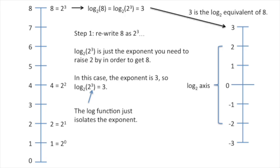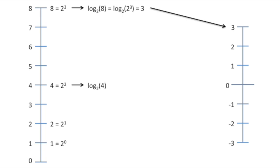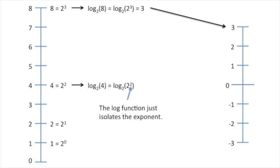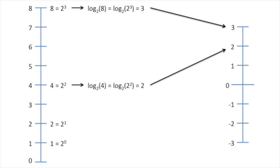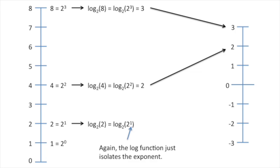That means 3 is the log base 2 equivalent of 8 on our log base 2 axis. Now let's take the log base 2 of 4. First, we rewrite 4 as a power of 2, and the log function just isolates the exponent. Since 2 is the exponent, the log base 2 of 2 to the 2 equals 2, and thus 2 is the log base 2 equivalent of 4. Now let's take the log base 2 of 2. We rewrite 2 as 2 to the 1, and again, the log function just isolates the exponent. Thus, 1 is the log base 2 equivalent of 2.